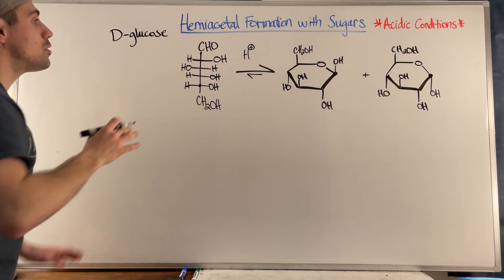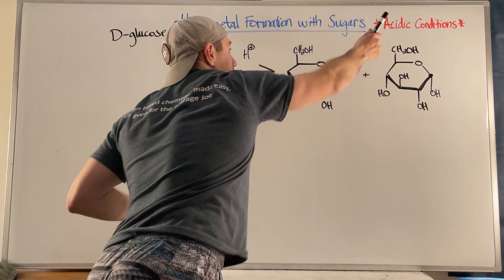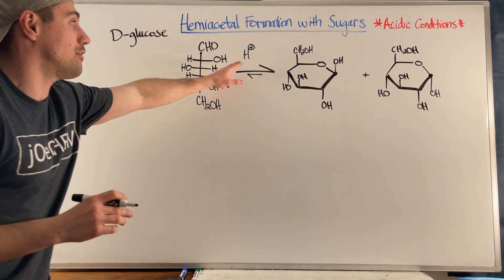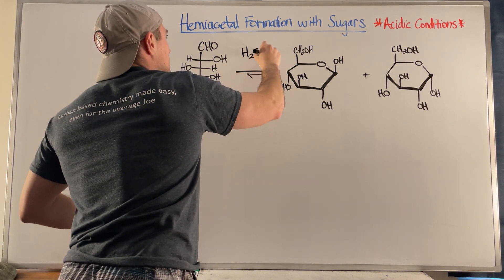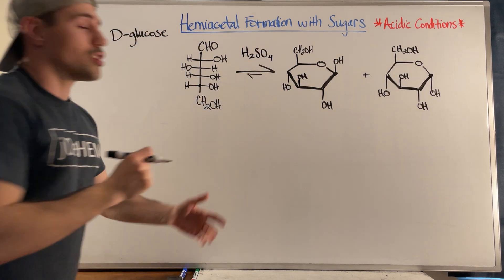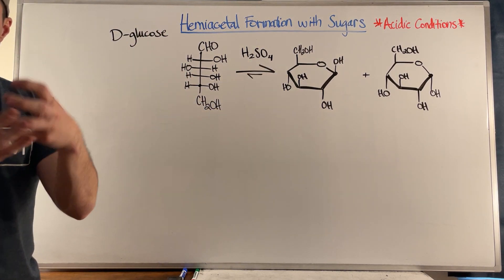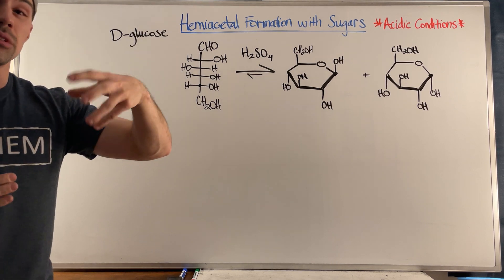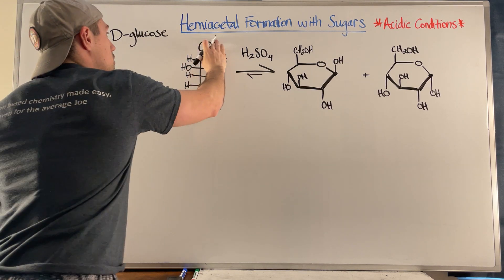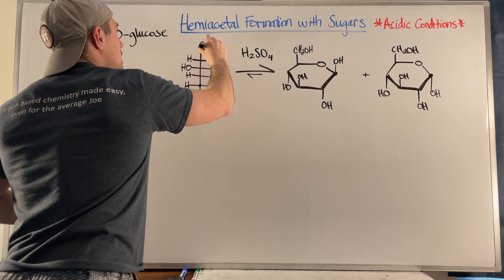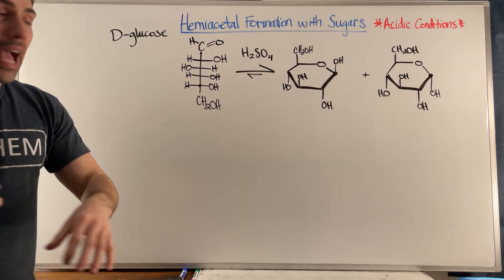So if we take D-glucose and this only happens with acidic conditions - if we have some acid like H2SO4, something acidic - just like we did in the past, you're going to protonate the carbonyl. That makes the carbonyl more susceptible to nucleophilic attack. It activates the carbonyl up here.